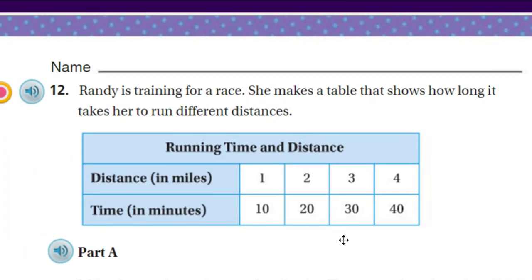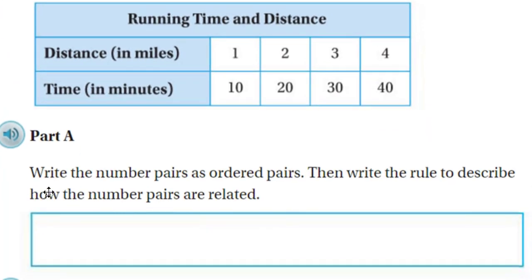First things here we have Randy. It says Randy is training for a race. She makes a table that shows how long it takes her to run different distances. Running time and distance. You can see the title of the table. We have distance in miles. The time is in minutes. Crucial units of measure there. Write the number pairs as ordered pairs. Then write the rule to describe how the number pairs are related.